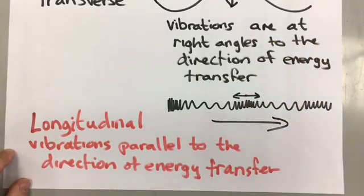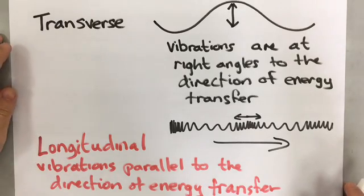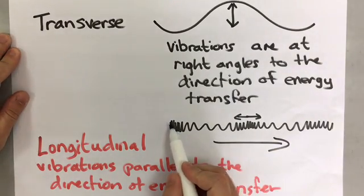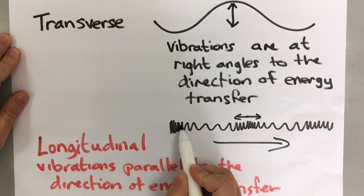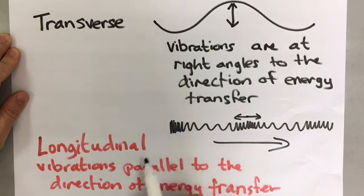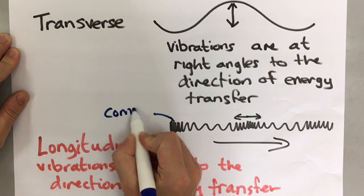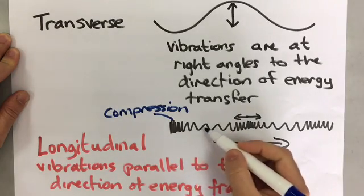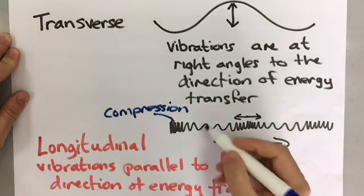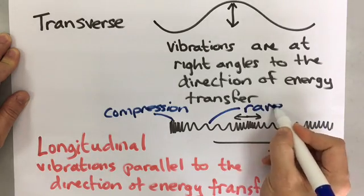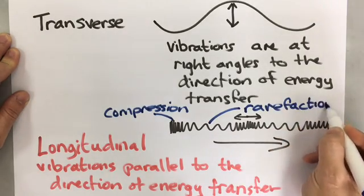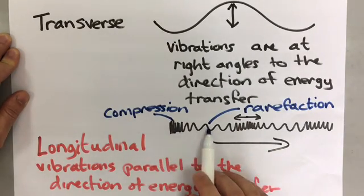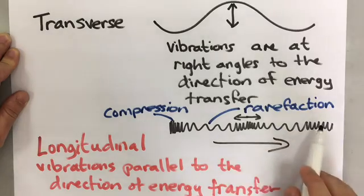There are two words you need to know about the longitudinal wave. As you can see, the vibrations cause the particles to be very close together. And we call that an area of compression. The particles here are much further apart because of the wave, and we call that an area of rarefaction. Those two areas alternate as you go along the wave. Compression, then rarefaction, then compression, then rarefaction, and then compression.